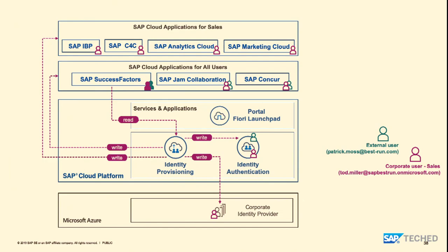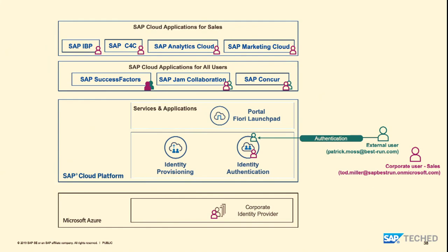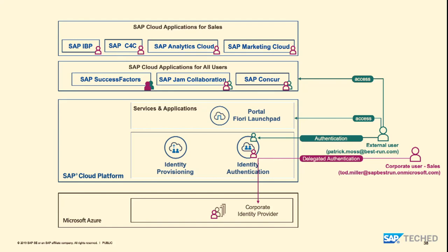After provisioning, the external user authenticates in identity authentication service and can access the launchpad and all applications available for them. The corporate user, based on the conditional authentication rule, will be delegated to Azure Active Directory for authentication, and will then be able to access the Fiori Launchpad portal and all cloud applications.